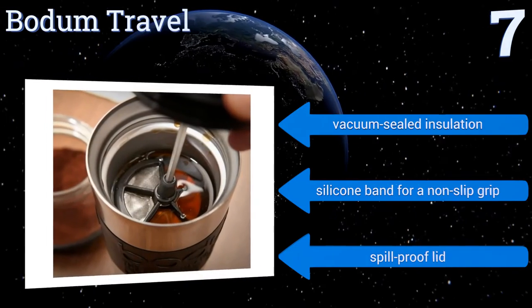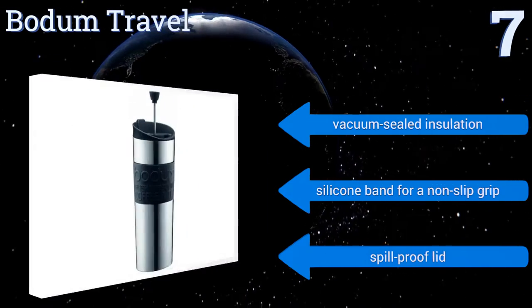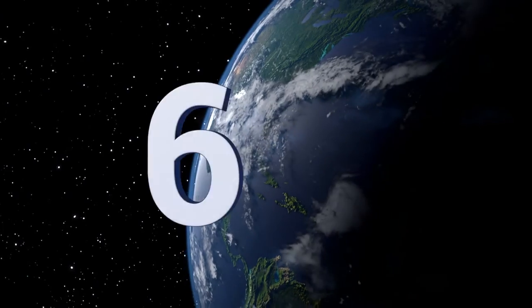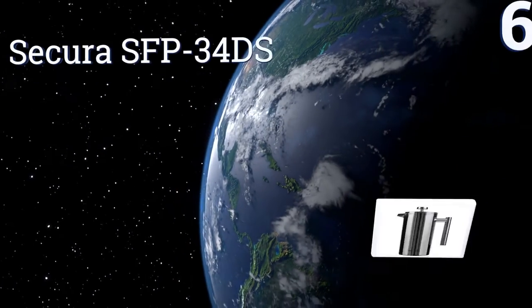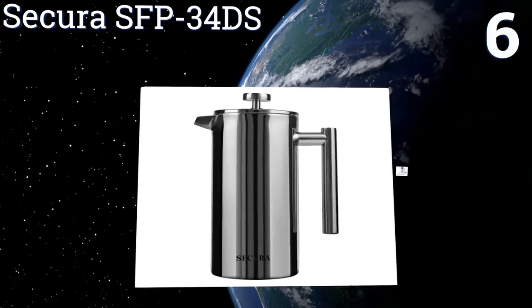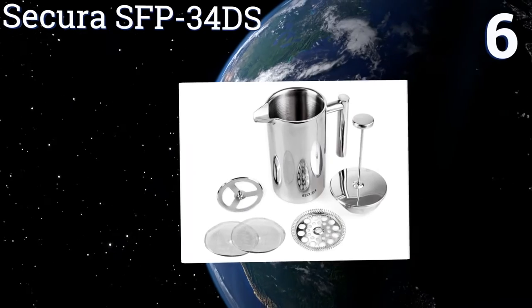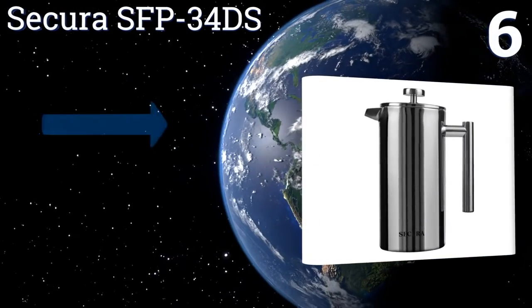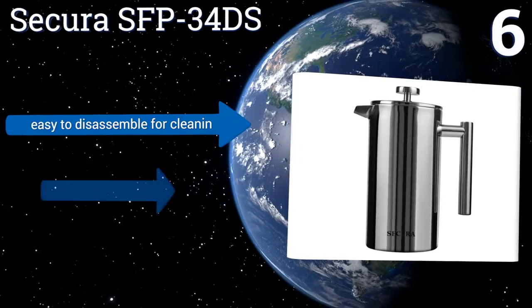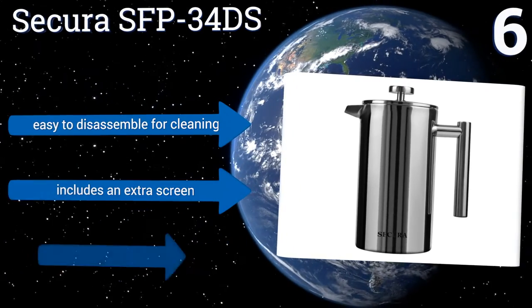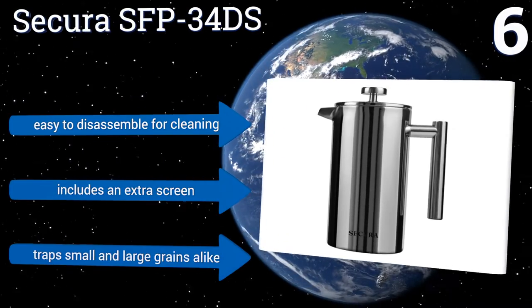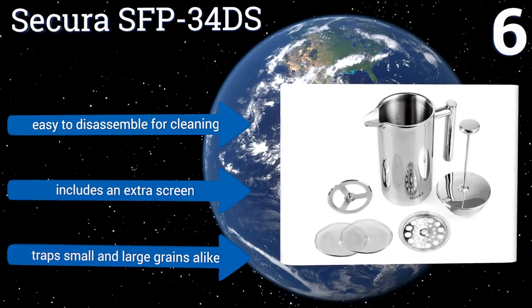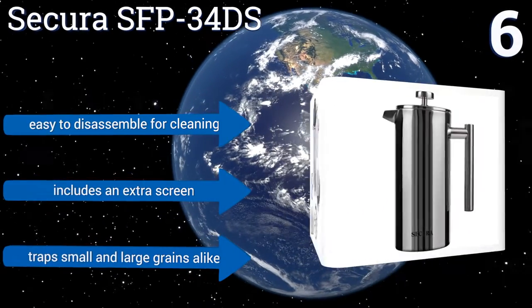Moving up our list to number six, it's really hard to beat the Secura SFP-34DS when it comes to quality for the price. It costs around what you would expect to pay for a glass press, but the screen, the carafe, and all the components are made out of premium 18/10 stainless steel. It's easy to disassemble for cleaning and includes an extra screen. It traps small and large grains alike.